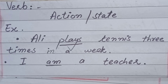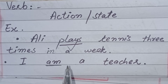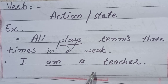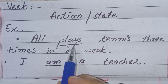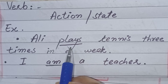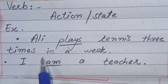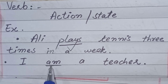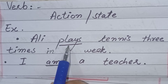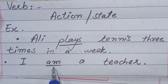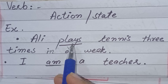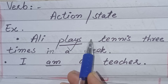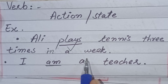Now we will talk about verb. A word that expresses an action, movement, or existence about the subject — noun or pronoun — is called a verb. For example: fly, do, write, come. In 'Ali plays tennis three times a week,' play is the verb. In 'I am a teacher,' there is no physical action — 'am' expresses a state or situation. So 'play' is a physical verb, while 'am' is a helping or auxiliary verb.